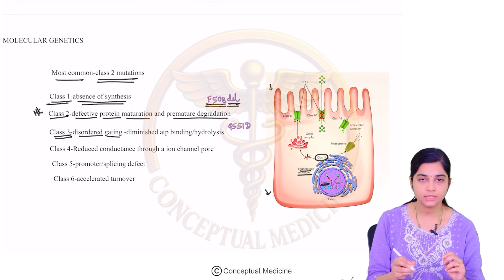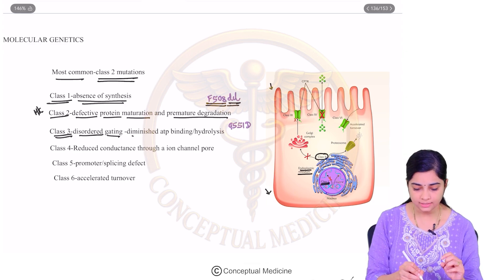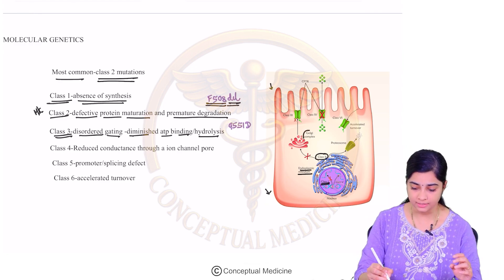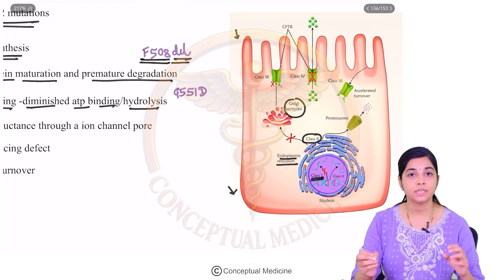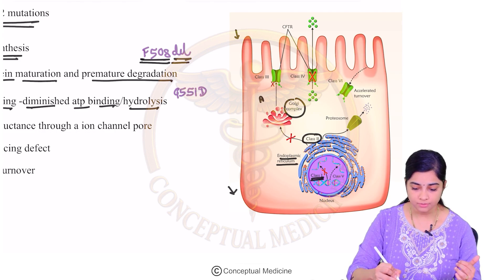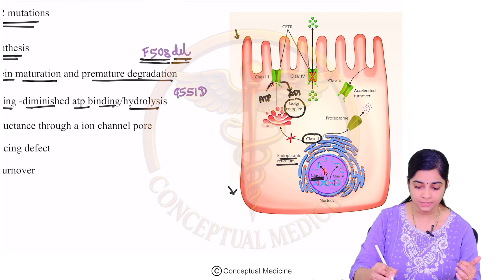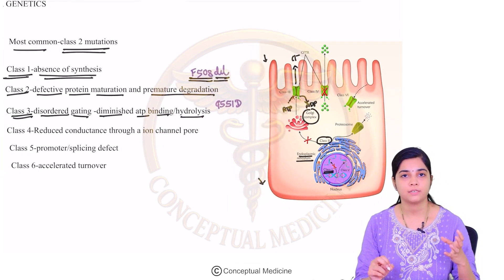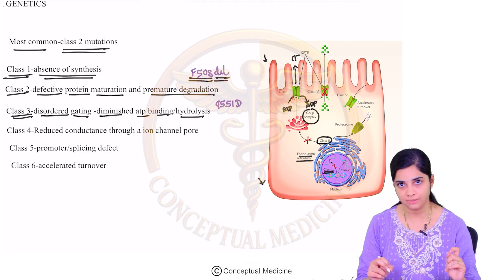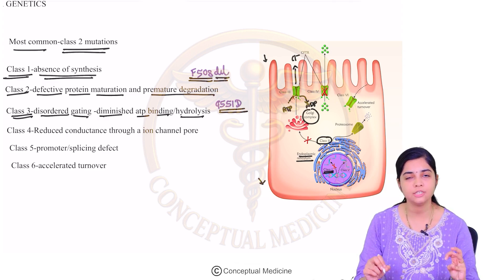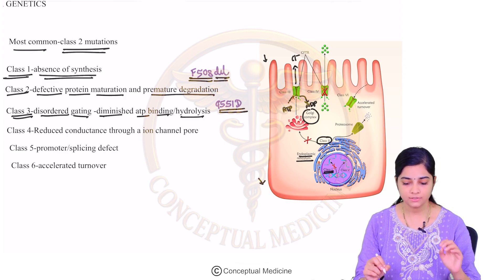In class 3, there is disordered gating — a diminished ATP binding and hydrolysis. Once CFTR products are released from the Golgi apparatus, they attach to the apical surface as anion channels. ATP molecules bind to CFTR, get hydrolyzed to ADP, and chloride ion transport occurs. In class 3, this gating is disrupted. The actual genetic defect is a G551D mutation. So the two key mutation names to remember are F508 deletion (class 2) and G551D (class 3).